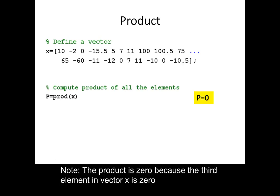Note: the product is zero because the third element in vector x is zero.